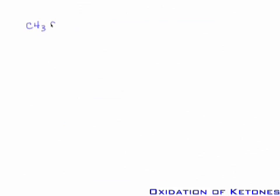Benedict's reagent and Fehling's reagent generate cuprous oxide, which is a brown precipitate, and can also be used as a test for aldehydes. Ketones don't readily oxidize — a ketone is pretty much as oxidized as it's going to get without breaking carbon-carbon bonds. So any attempt to use these oxidizing agents on standard ketones leads to no reaction, unless really harsh conditions are employed and you start breaking up the molecule.